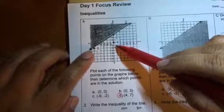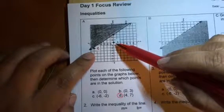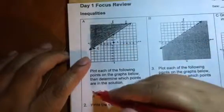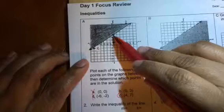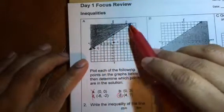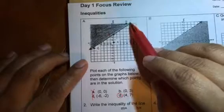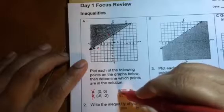Well, A and C definitely are not inside the shaded region. So it can't be A or C. Now B is on the line. So if you're looking at this, this line is a solid line and it includes that point. So because it includes anything that's on this line, this is a solution.